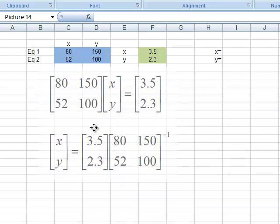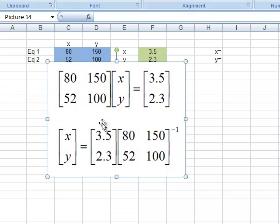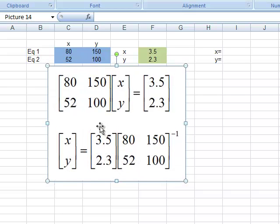What we can do is we can rewrite this equation in the form of a matrix. So here we have a 2 by 2 matrix: 80, which is our x value, 150 our y value. That's the first equation. 52 x value, 100 y value. That's our second equation.